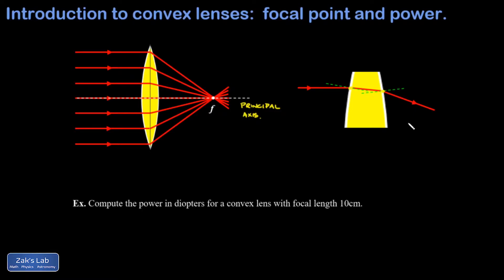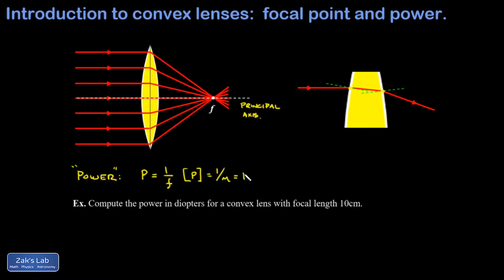If the lens has spherical surfaces, then parallel rays coming into the lens will all refract to that single focal point. We often talk about lenses in terms of their power — the larger the power, the stronger the lens, meaning rays converge to a nearer focal point. Power is defined as one over the focal length. The units of optical power are one over meters, and this is given the special name diopters.